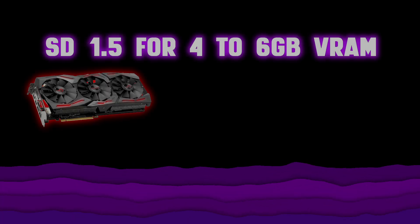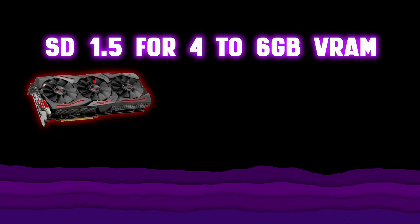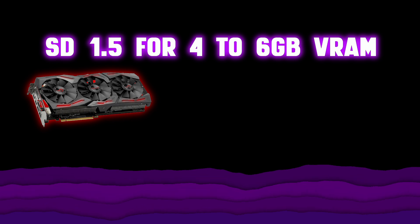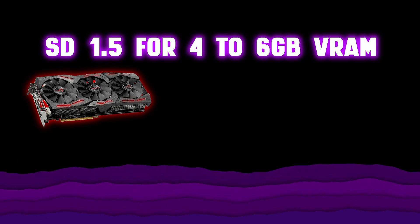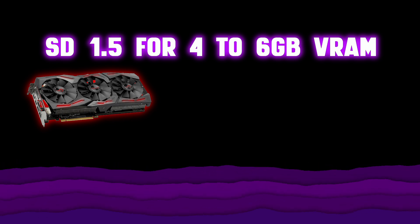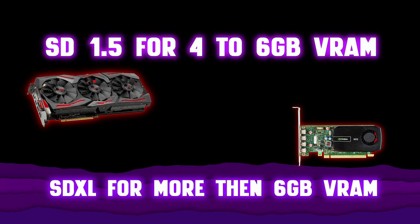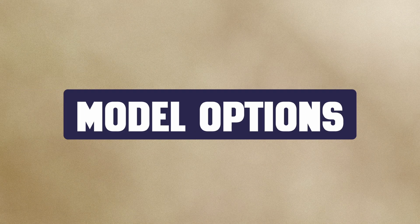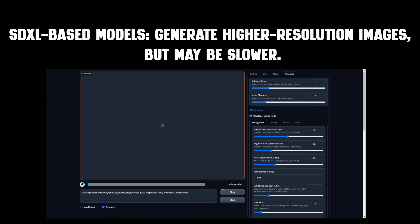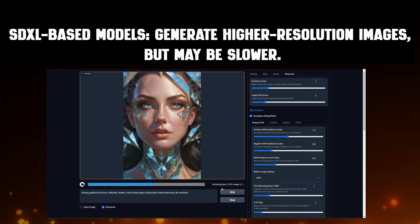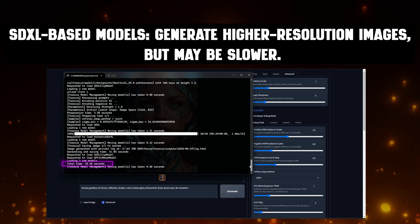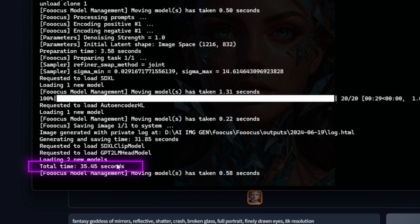If you have a GPU with 4 to 6 GB VRAM, consider using models based on Stable Diffusion 1.5. If you have a GPU with more than 6 GB VRAM, choose SDXL-Based Models. SDXL-Based Models generate higher resolution images, but may be slower.